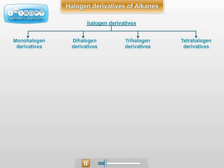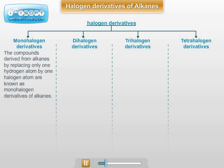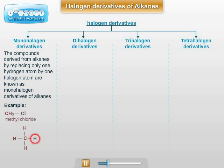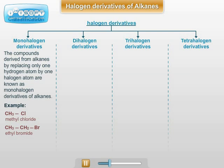For example, Monohalogen Derivatives of Alkanes: The compounds derived from alkanes by replacing one hydrogen atom by one halogen atom are known as Monohalogen Derivatives of Alkanes. Example: CH3Cl, that is Methyl Chloride; C2H5Br, that is Ethyl Bromide.